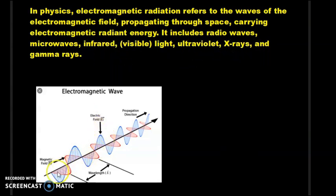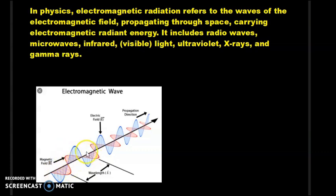This picture depicts electromagnetic radiation propagating through the air. The blue waveform indicates the electric field and the red one is the magnetic field. Both electric and magnetic fields are in phase, but they are orthogonal in nature.